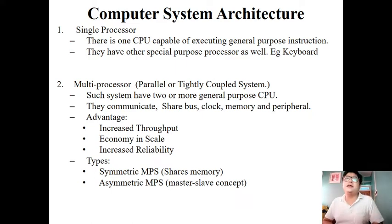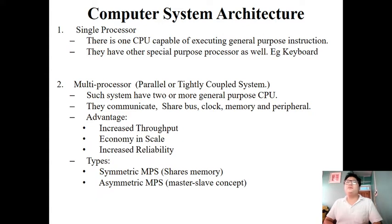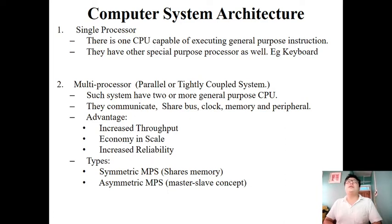The next advantage is increased reliability. In a dual-core system, if one CPU fails, the other CPU will handle the situation and continue execution of user processes. In contrast, in a single processor system, if the CPU fails, the entire system collapses. Now let's talk about the types of multiprocessor systems.